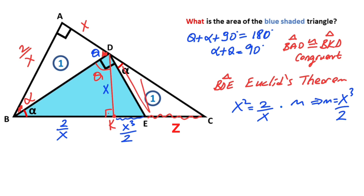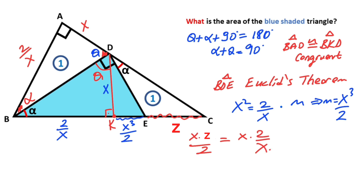If we calculate the area of this triangle — x times z over 2 — we note that equal areas give us: x times x squared over 2. Simplifying the expression, we get z equals x.